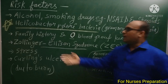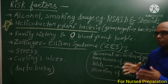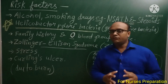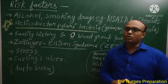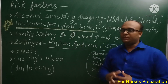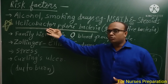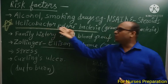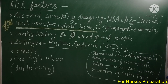Next है Helicobacter pylori bacteria — most, most, most important। Competitive exams में पूछा जाता है कि which bacteria can cause Peptic Ulcer? तो बताना है: Peptic ulcer का most common cause है Helicobacter pylori bacteria। ये बहुत ही important है। Helicobacter pylori bacteria gram negative type का bacteria होता है।